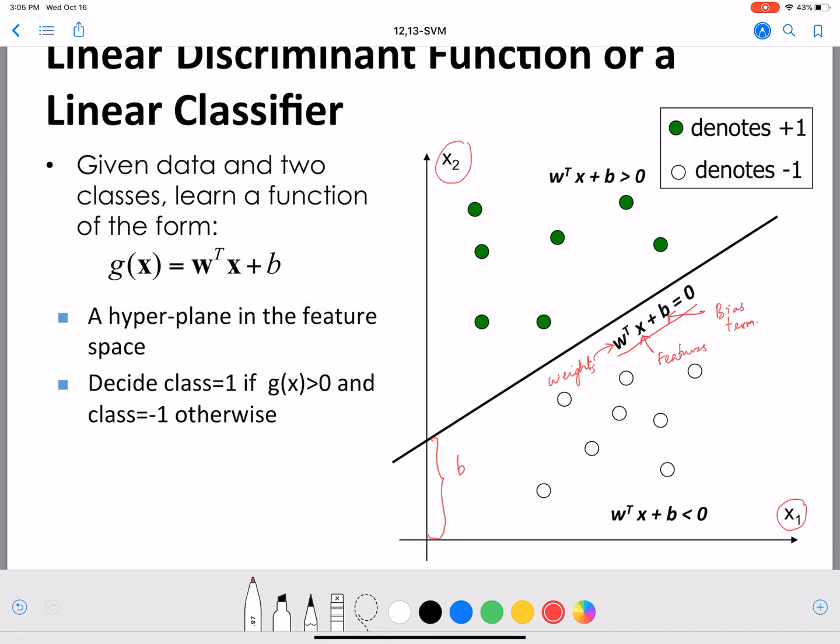Without B, the line always has to pass through the origin. A non-zero intercept gives it the flexibility to lie on either side of the origin, where B can be greater than or less than zero. These are two sets of points here: one set marked in green and another in white. The line perfectly classifies them.